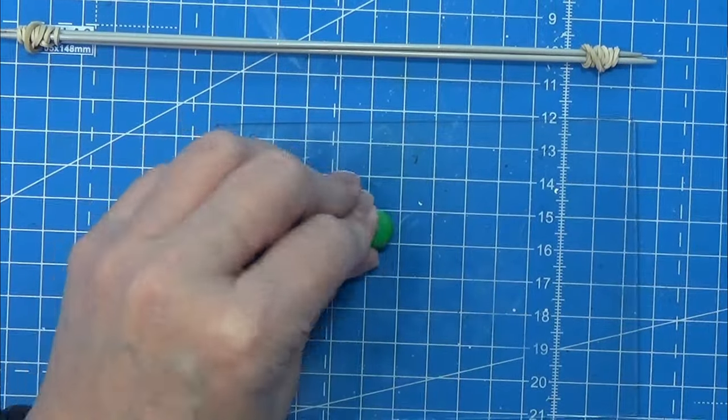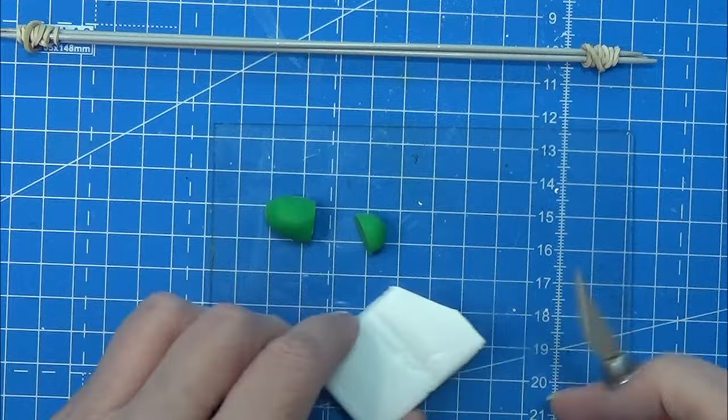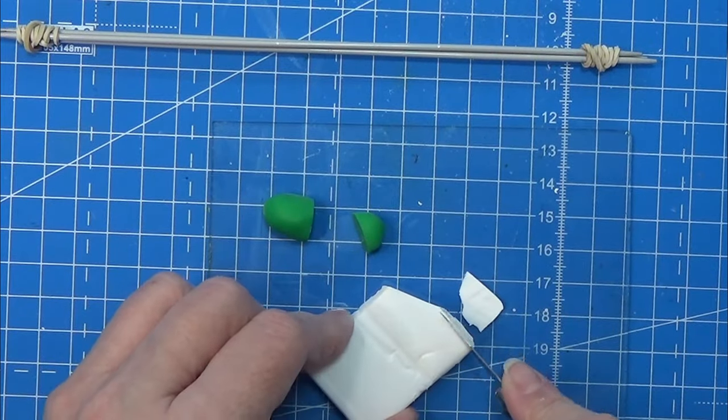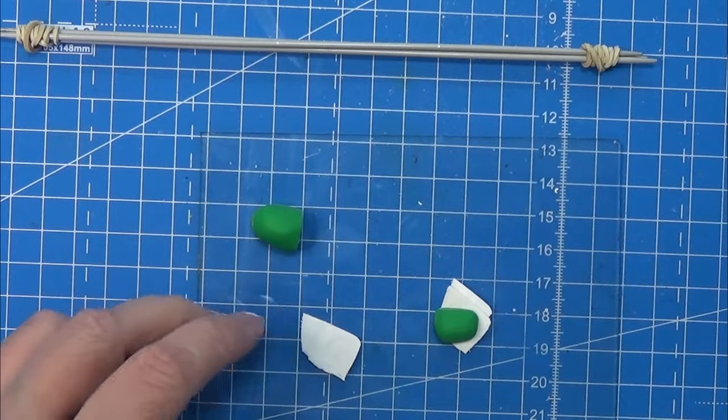So first I mix a light green with a dark green and I get this color, and I'm taking a third of this and mixing with some white so I get a lighter green out of this little piece here.